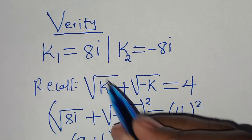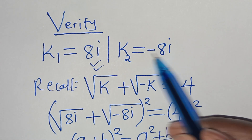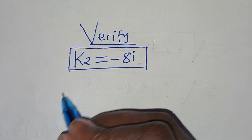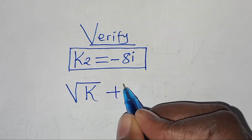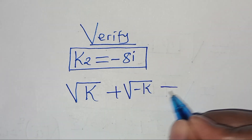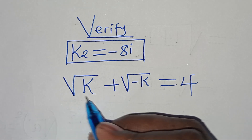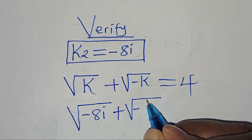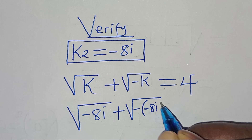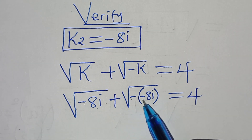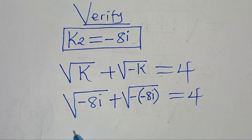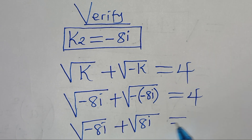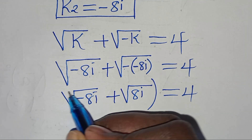Now let's verify k₂ equals minus 8i. Substituting into the square root of k plus the square root of minus k equals 4: we have the square root of minus 8i plus the square root of minus times minus 8i. Since minus times minus 8i is positive 8i, this becomes the square root of minus 8i plus the square root of 8i equals 4. Now let's square both sides.